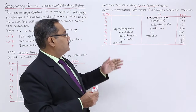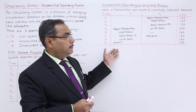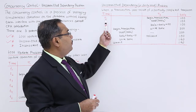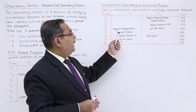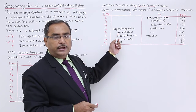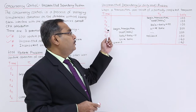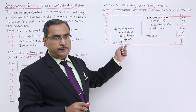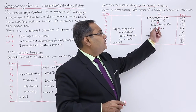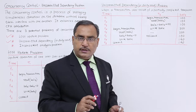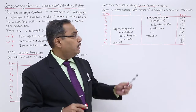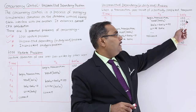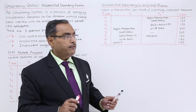Let us go through the example. T2 is a transaction which has been initiated at instant T1, and T1 is a transaction which has been initiated at T4. So T2 is the older transaction and T1 is the younger transaction. Begin transaction — so the transaction has been initiated at instant T1. Then read balance X; balance X is a variable initially having a value of 100.